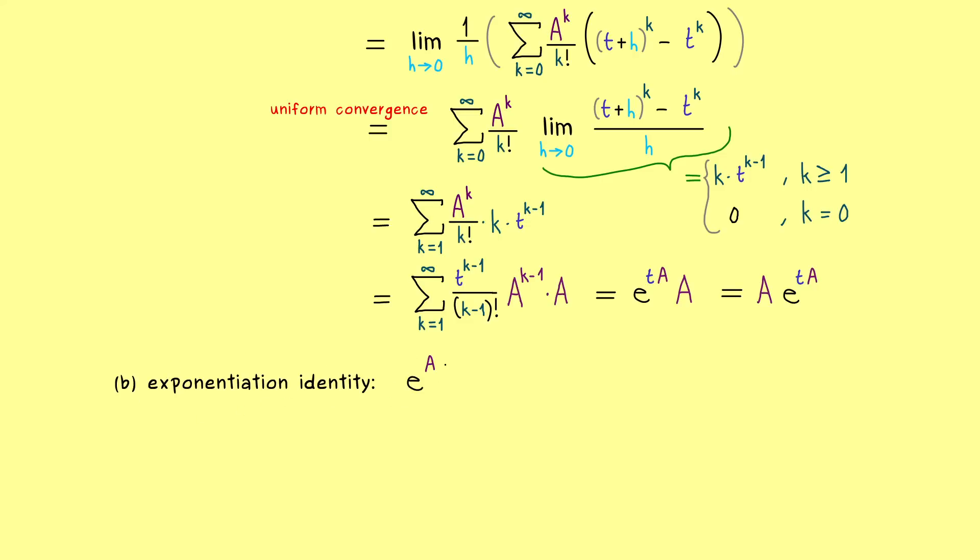For the standard exponential function it means if you have the addition inside, then you can pull it out and then you have the product of two exponential functions. This is quite nice and if we work with the power series you might know that we need the so-called Cauchy product for it.